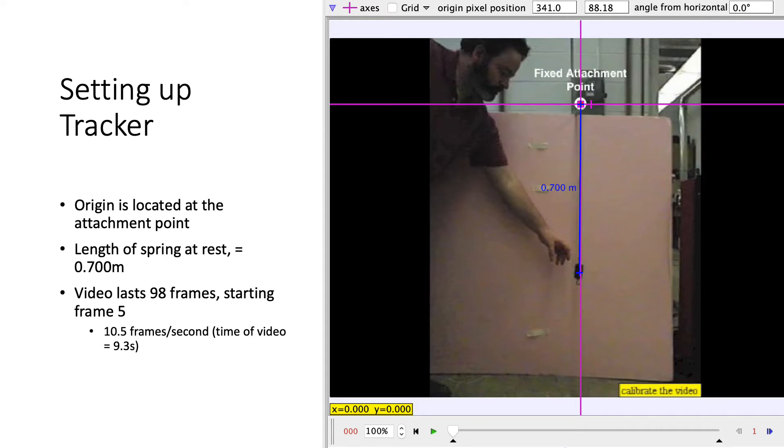Setting up Tracker, we have the fixed attachment point at the top, the mass on the bottom, and the spring connecting the two. The origin is located at that attachment point, and the length of the spring at rest is 0.7 meters.